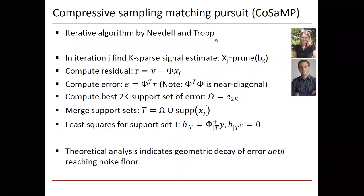From LASSO we move to CoSaMP — Compressive Sampling Matching Pursuit, by Deanna Needell and Joel Tropp. CoSaMP is an iterative method where in every iteration you perform a projection. In iteration j, you find the k-sparse signal estimate by pruning your current solution: you had a solution b_k, and x_j is a pruned k-sparse version. Next, x_j is used to compute a residual — the actual noisy measurements y minus φ times your hypothetical solution x_j. From the residual, you compute an error: φ transpose times the residual.